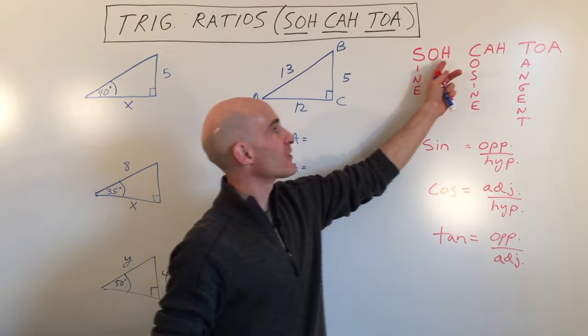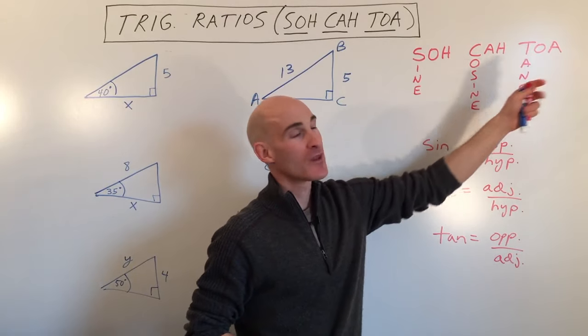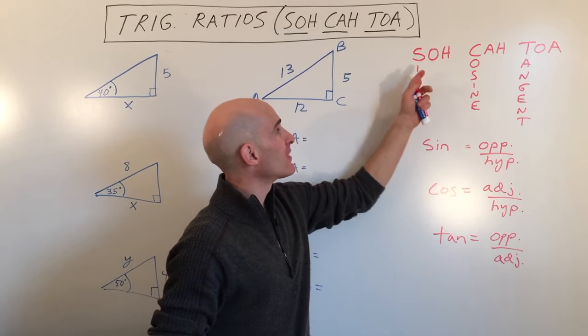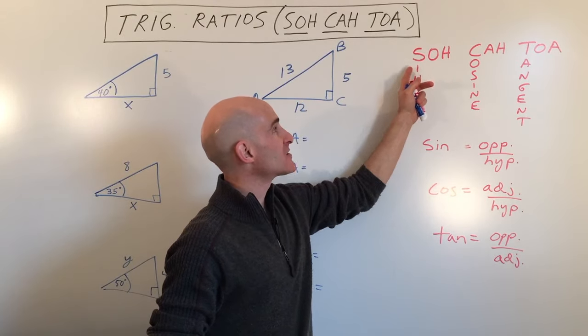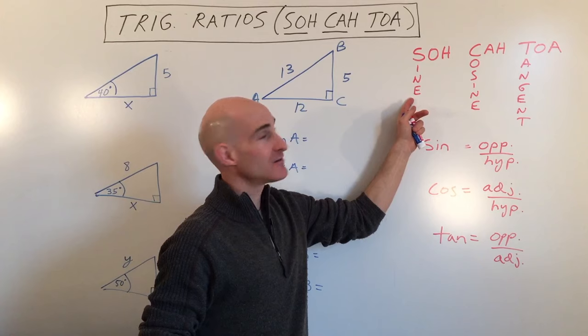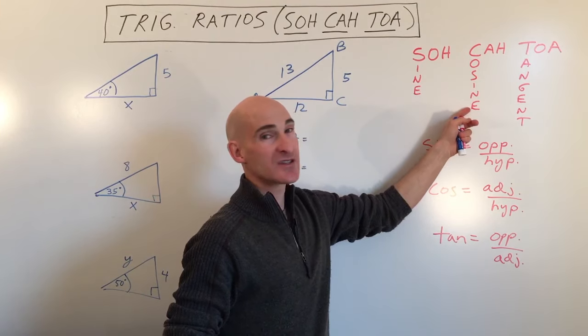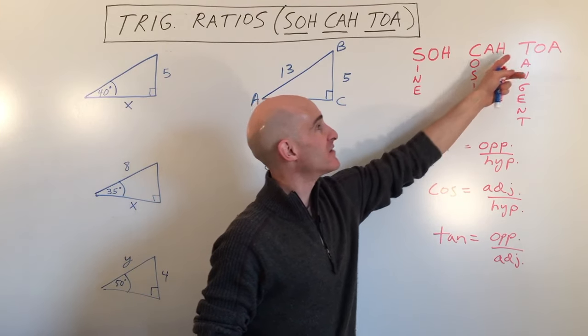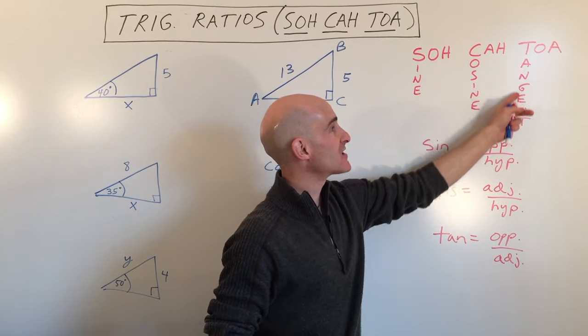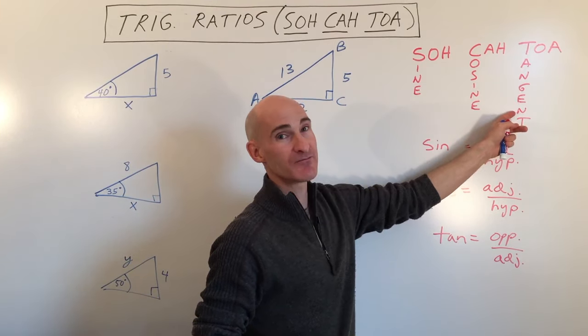What does the SOHCAHTOA acronym refer to? S stands for sine, C stands for cosine, and the T here stands for tangent.